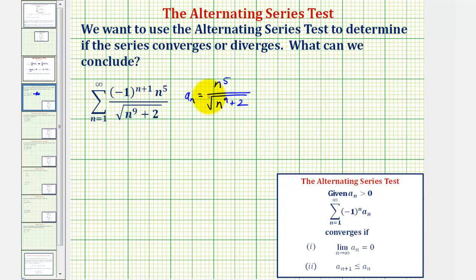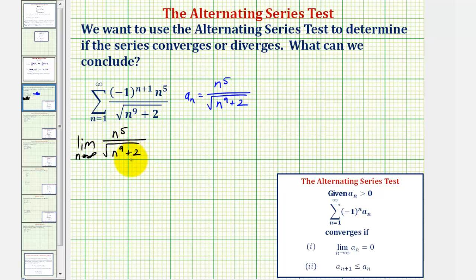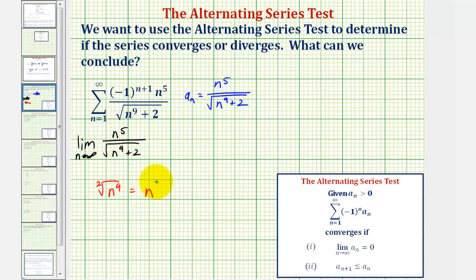First notice that a sub n is always positive for all values of n, so now we'll determine the limit as n approaches infinity of a sub n. There's a shortcut for determining this limit by looking at the degree of the numerator and denominator. Looking at the denominator first, notice how the plus two is irrelevant as n approaches positive infinity, and we can think of the denominator as just the square root of n to the ninth, and because the index is two, we can write this as n raised to the power of nine-halves.